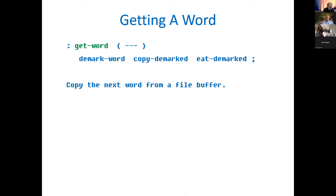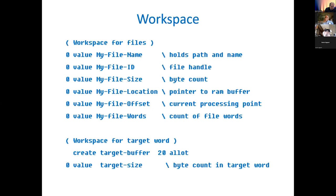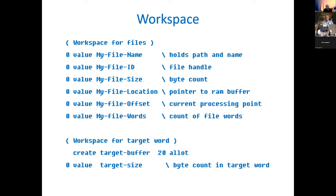These are the workspaces necessary. I'm using ANSI Forth in Win32Forth to do the file access — it works amazingly well. There's a lot of little housekeeping reading files and handling error codes that come back, but once you've got it written out it's very clean. The elements needed for file access: a file name, you get a file handle from the system, and you determine size, location offset, and number of words. The workspace for the target word is a simple target buffer with 20 letters, and 'target-size' holds how many letters are in the target word.